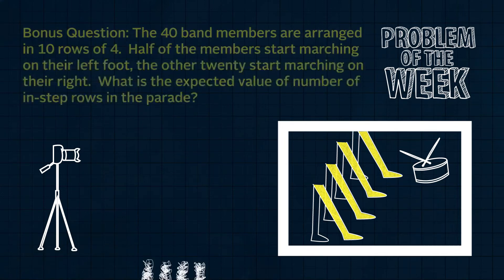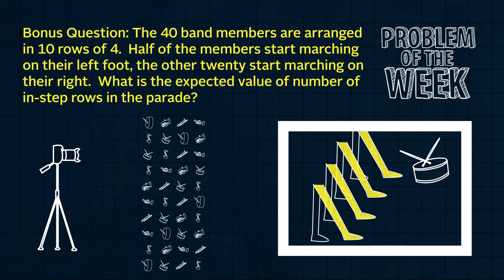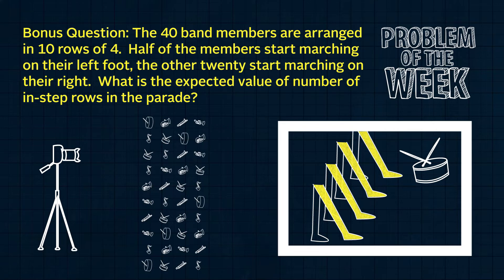And a bonus problem: what is the answer if instead exactly 20 of the students will start with their left foot and 20 will start with their right, but the band members are randomly arranged into the 10 rows of four? Submit your solutions with work shown on this page.